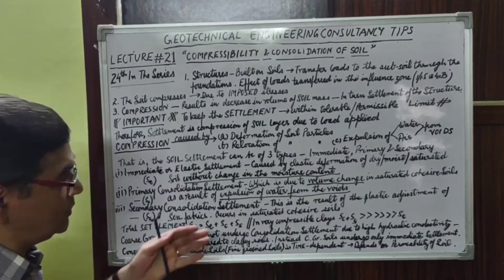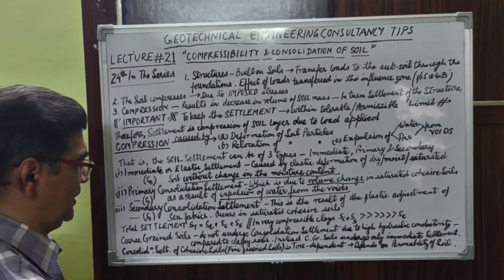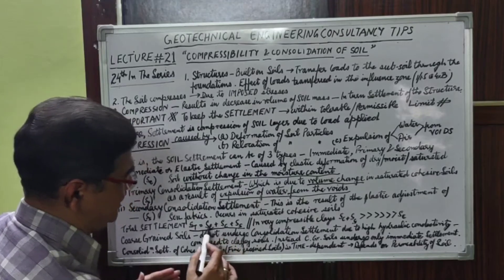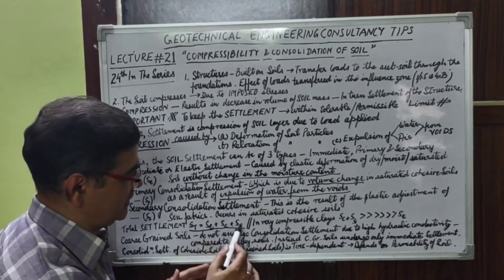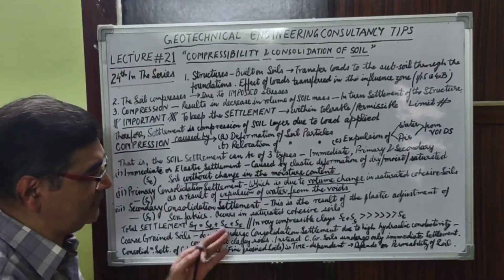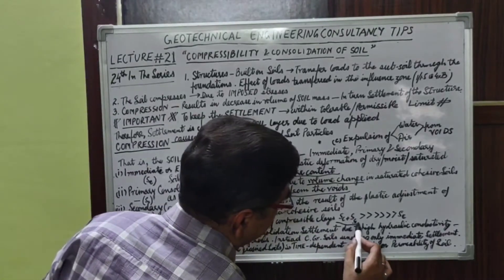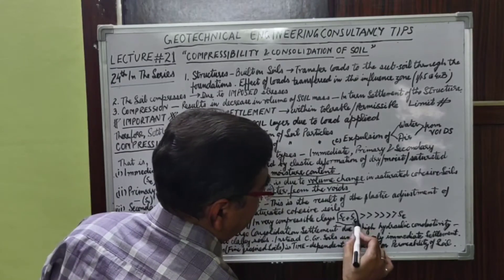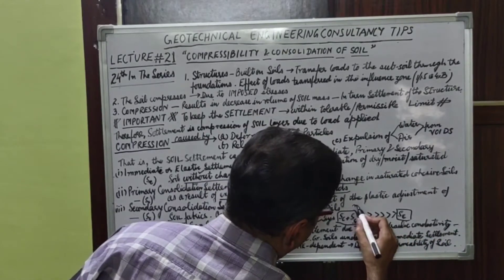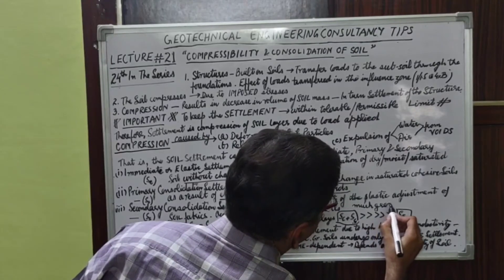The total settlement produced after loads have been imposed is thus a combination of: immediate or elastic settlement, consolidation settlement, and secondary settlement. However, one major point to note is that in very compressible clay soils, the consolidation settlement — that is Sc plus Ss — is much greater than the immediate settlement.